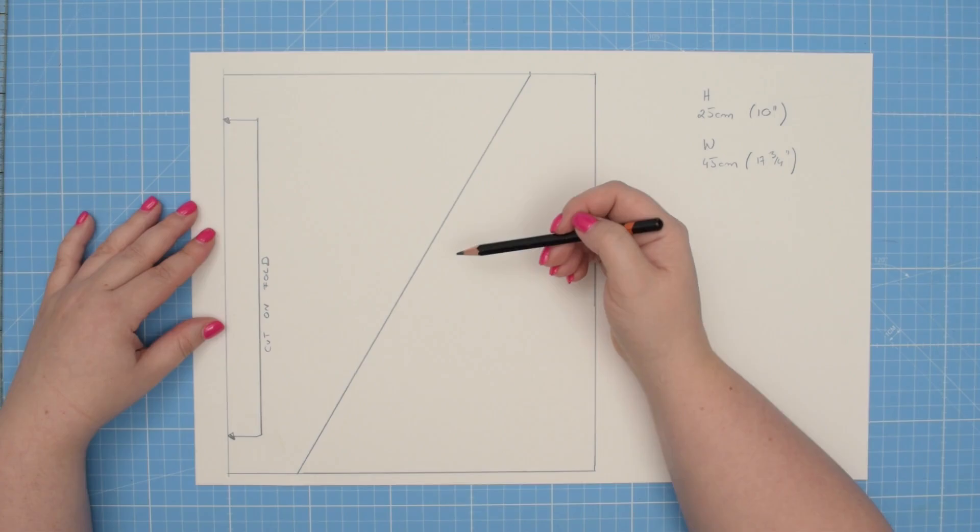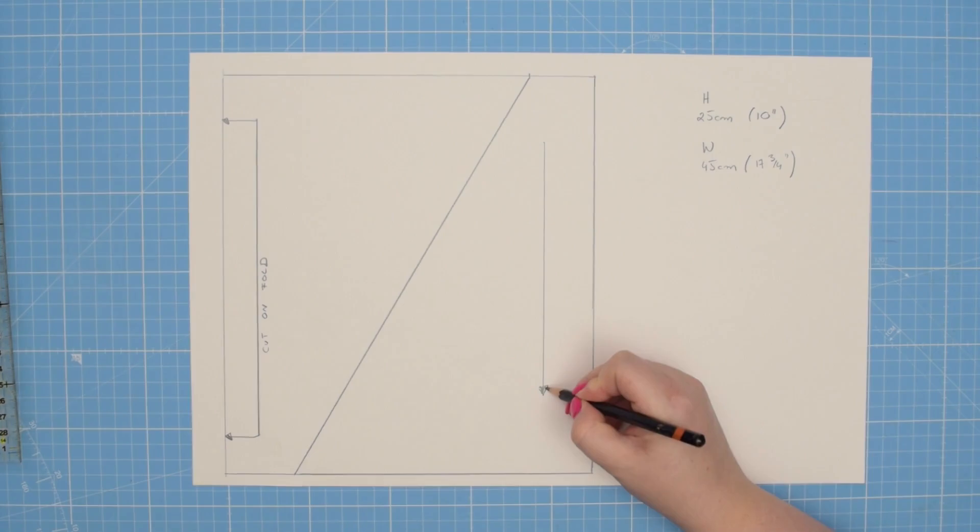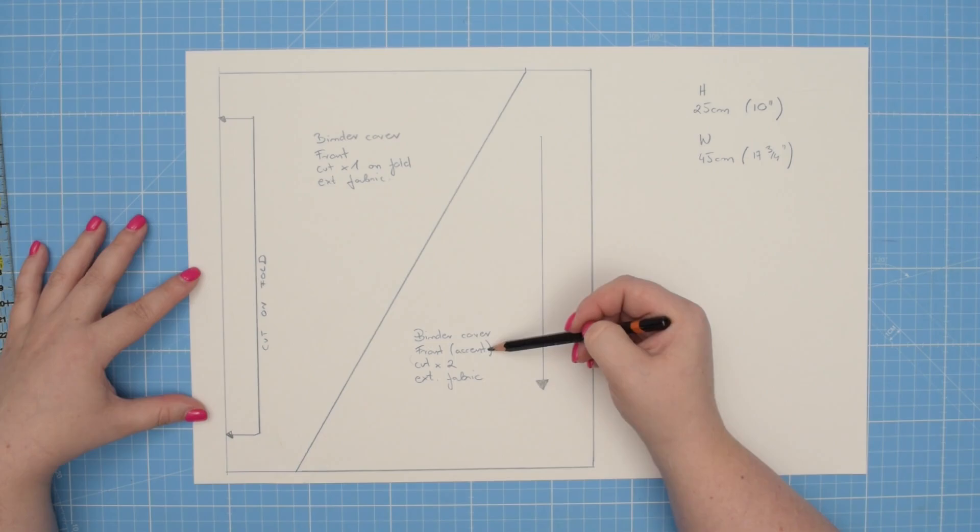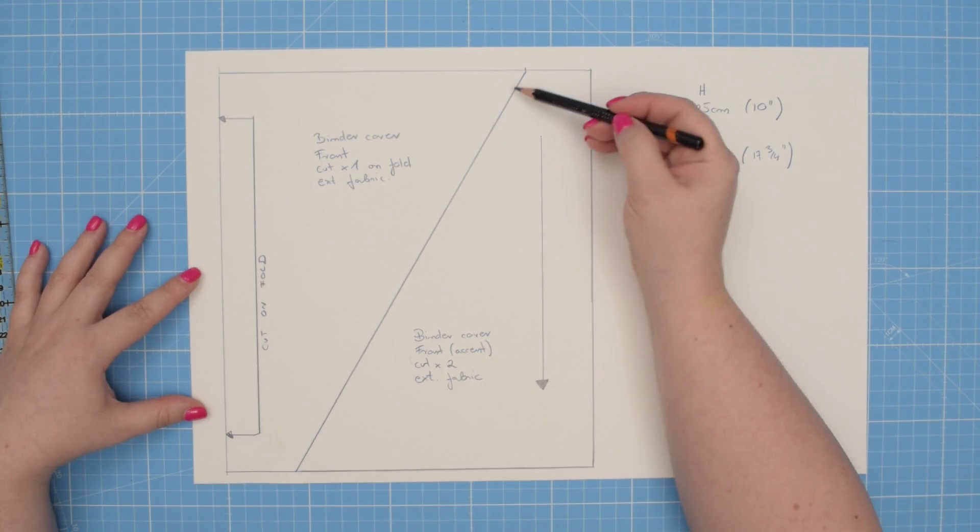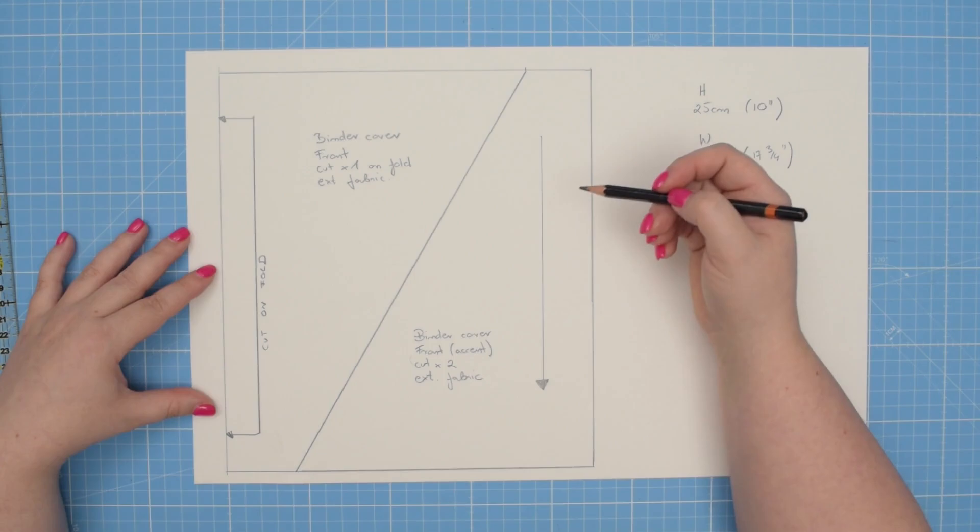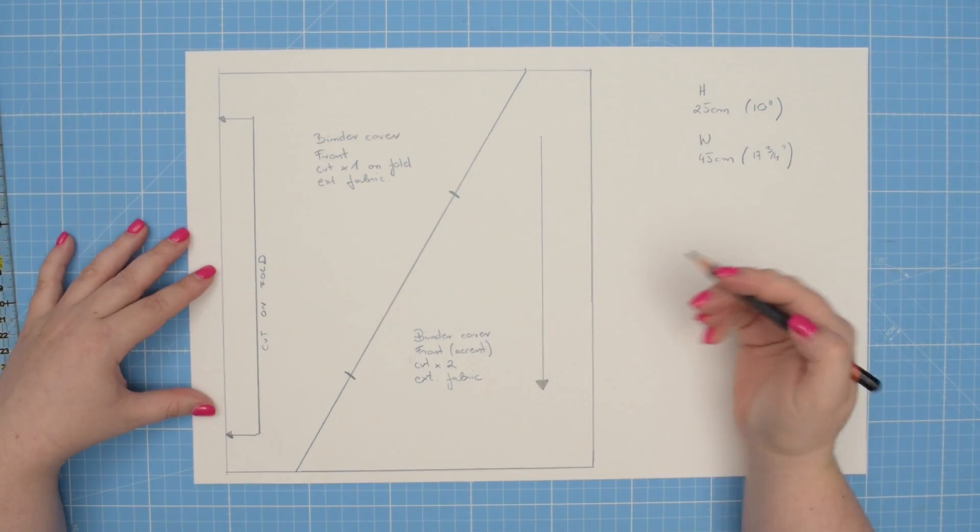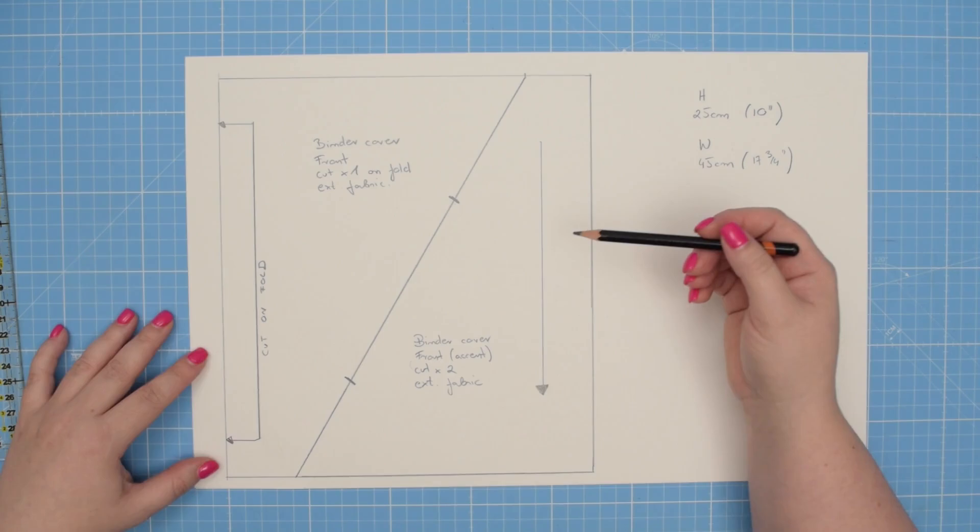Since we divided our pattern piece in two different sections, this means that we need to draft two separate pattern pieces. Make sure you draw a grain line so you know exactly how to cut your fabric. Just like that. And then you can label your pattern different pieces. I called my pattern a binder cover because that's what I'm making. And I called this pattern piece front accent and this one just the front. This needs to be cut two times from external fabric, and this pattern needs to be cut one time on fold from external fabric. I also highly recommend adding extra notches so you know exactly how to sew this seam. I can just draw a couple of lines. And these are my notches. So when I cut my fabric, I know exactly how to align those two pieces.